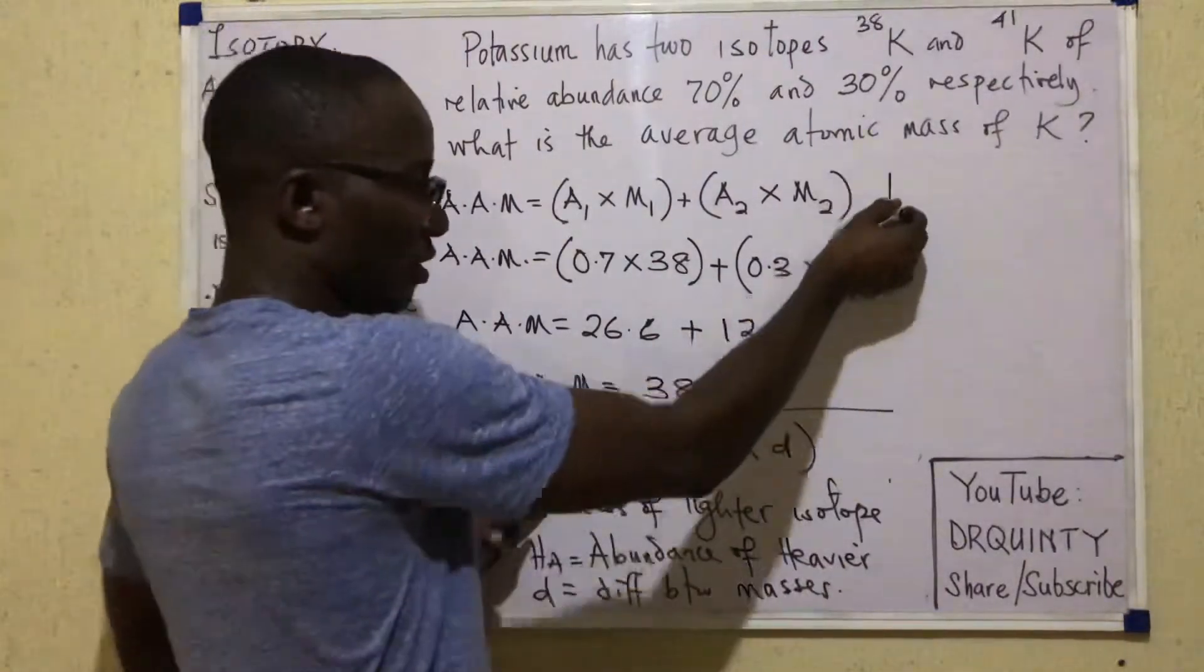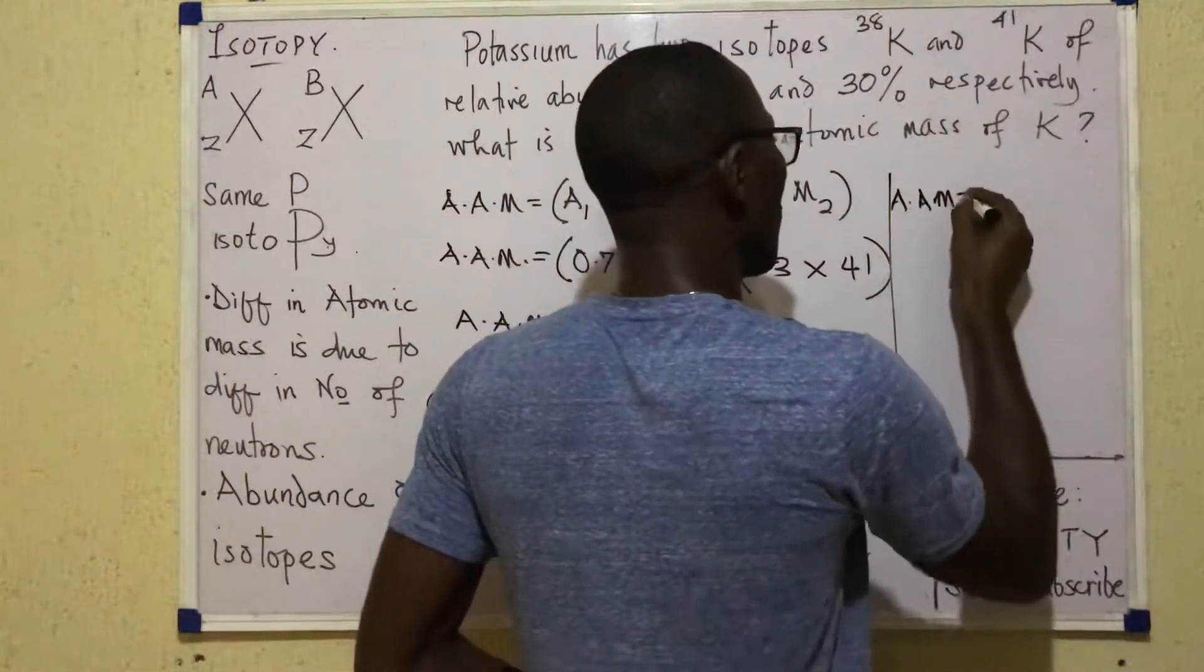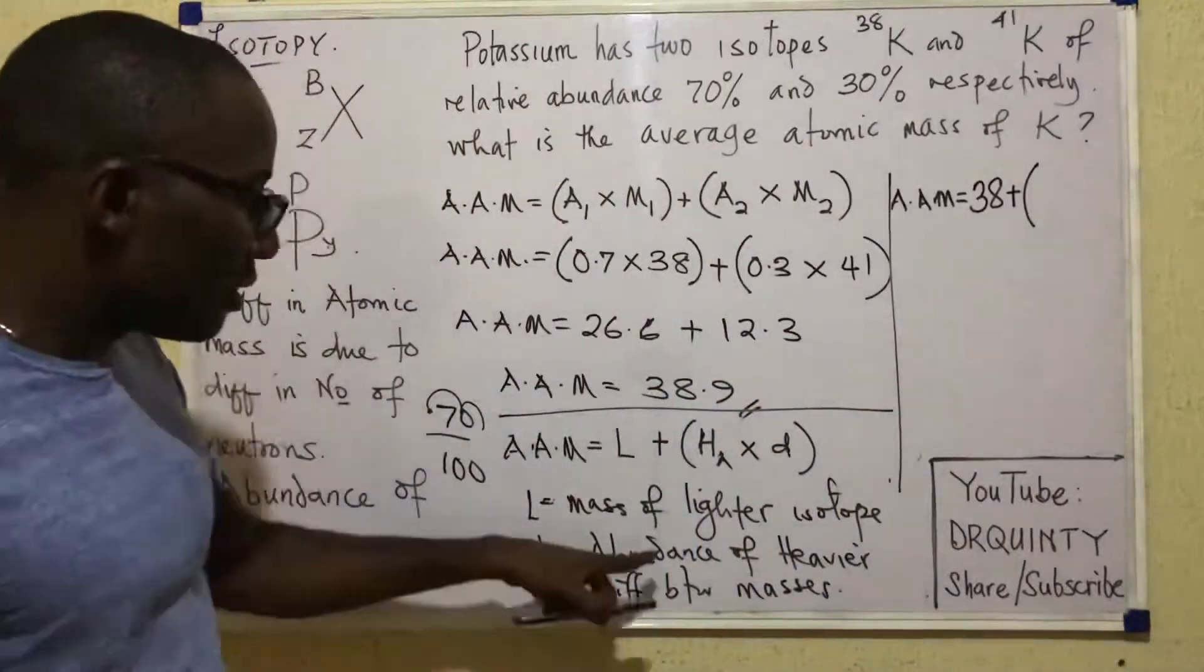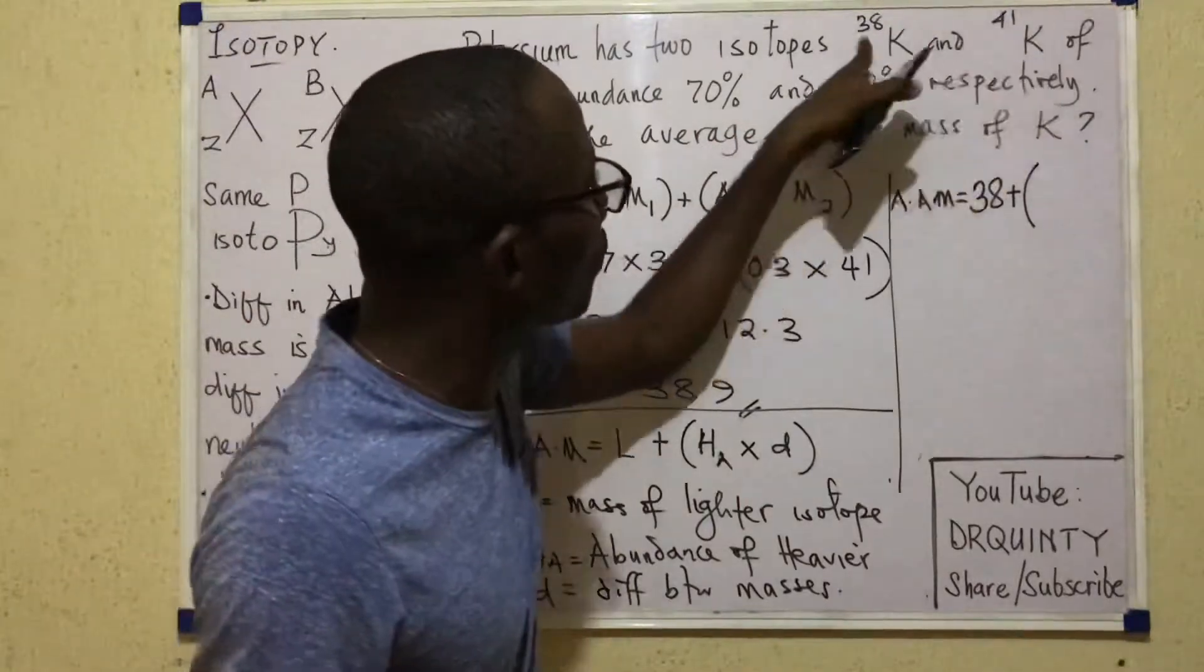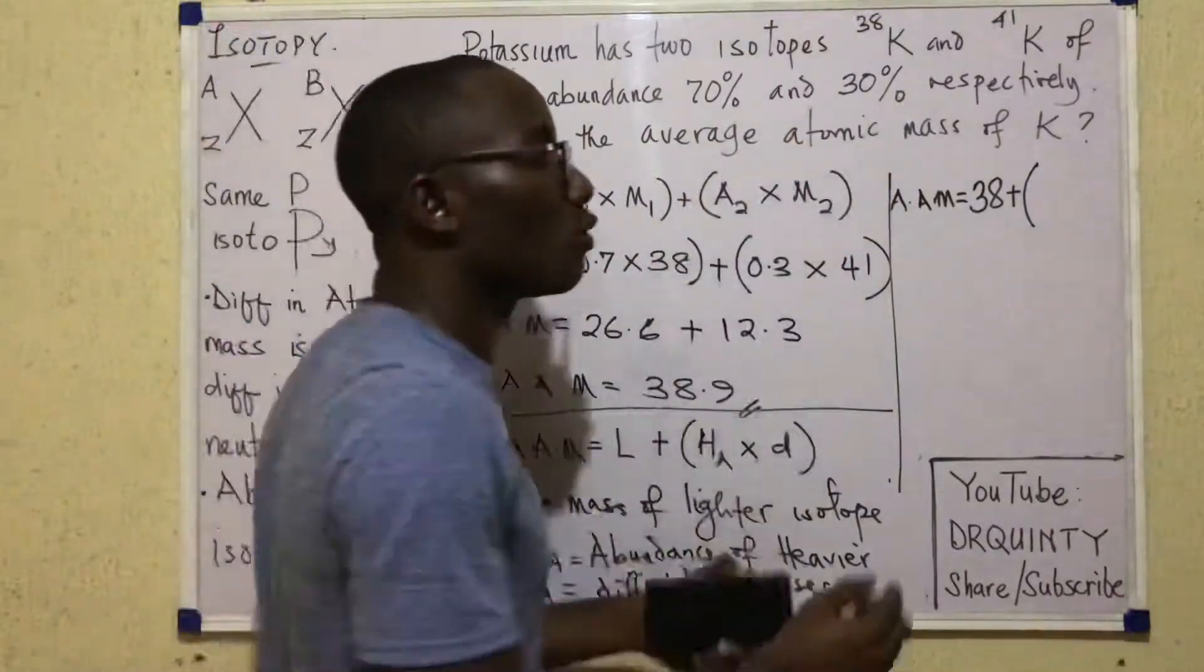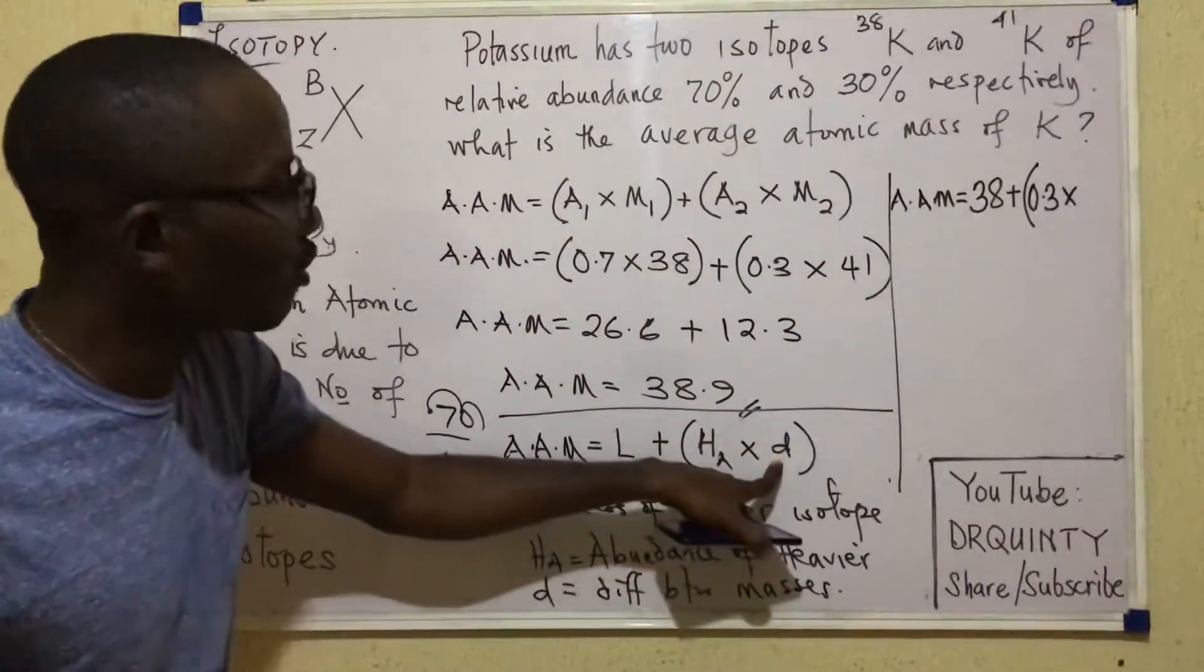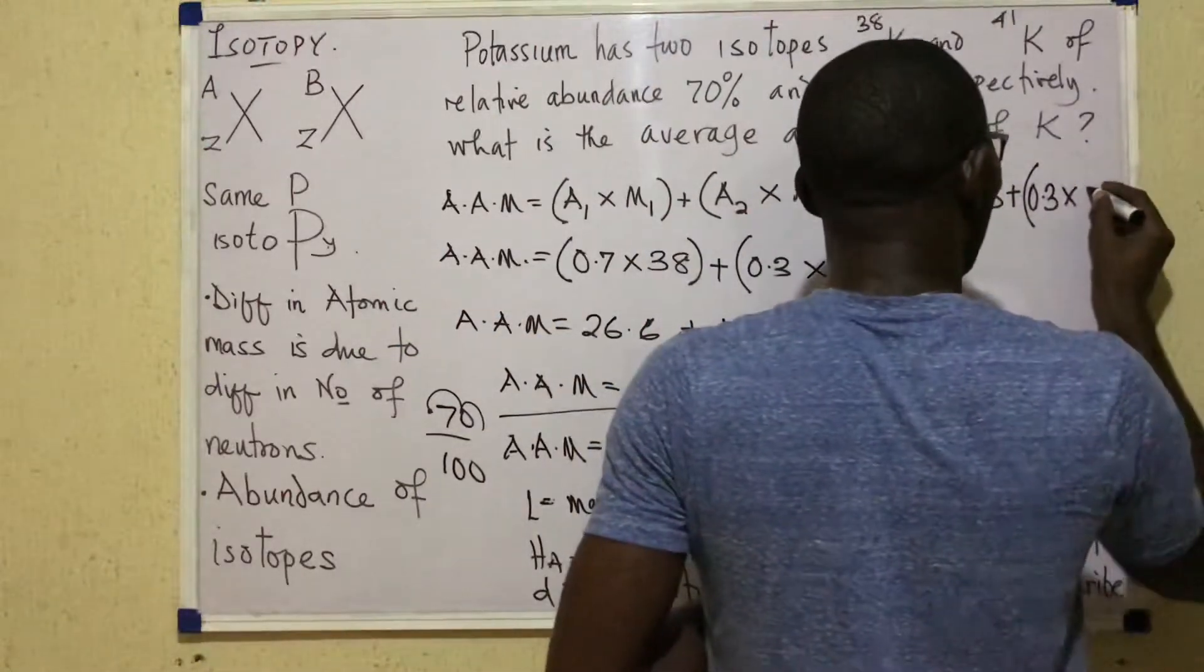Let's see if that formula will work. Average atomic mass, this space is just enough for me. So I'll say average atomic mass equals the mass of the lighter isotope is 38. So I'll write 38 here. Plus the abundance of the heavier isotope. Now looking at the isotopes, which one is heavier? 41. And what is its abundance? 30%, which is 0.3 times. The last thing there is the difference between the masses. What's the difference between these two masses? 3.